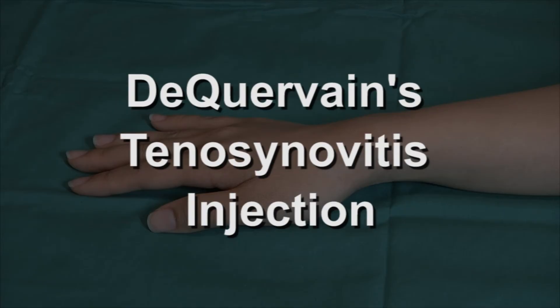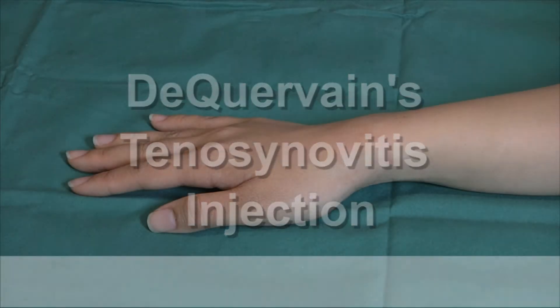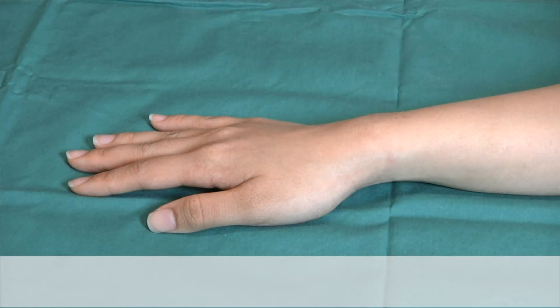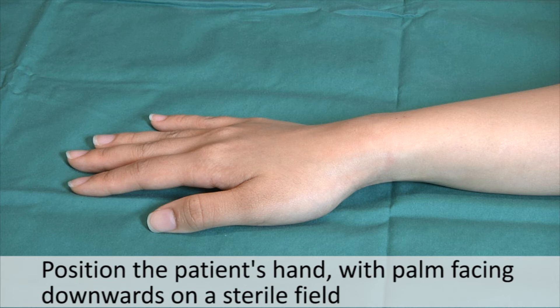Today, we are going to do an injection for de Quervain's tenosynovitis. First, position the patient's hand with palm facing downwards in a sterile field.